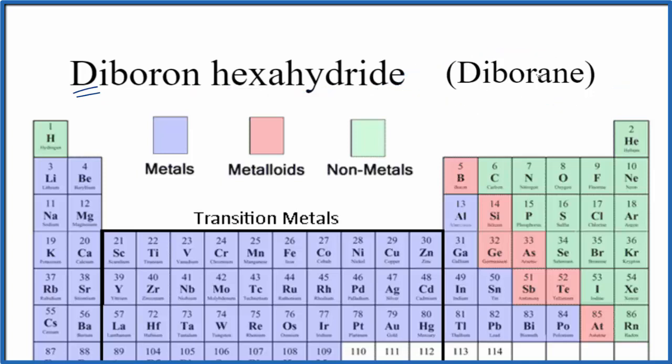So if we go to the periodic table and we look up boron, boron is right here, and boron is a metalloid. For hydride, we're talking about hydrogen, and right here is hydrogen, and even though it's with the metals over here, hydrogen is considered a nonmetal.